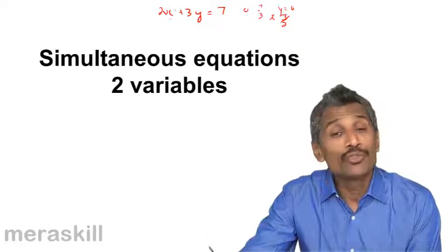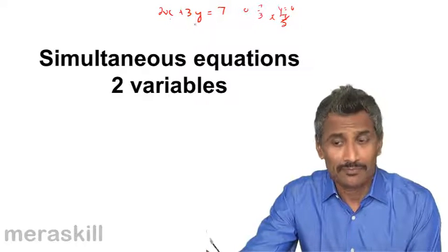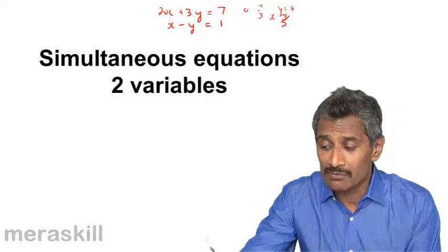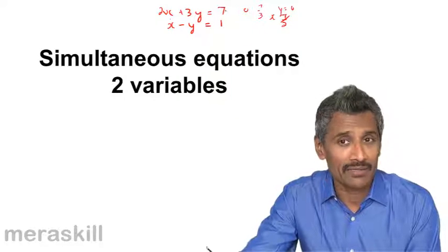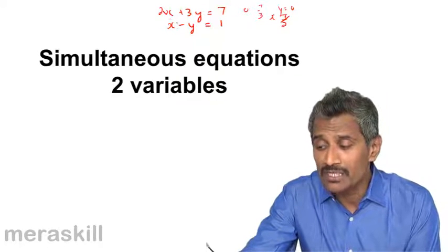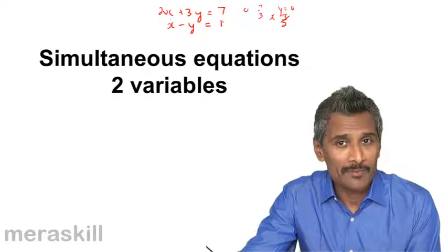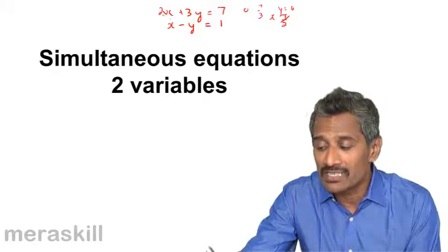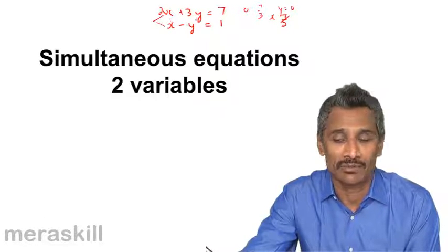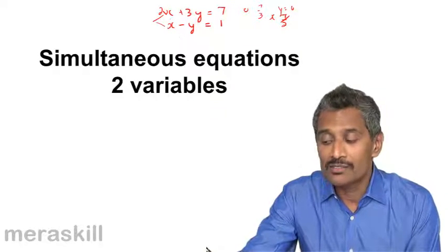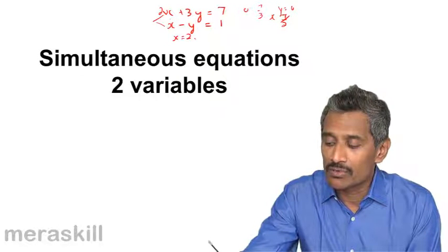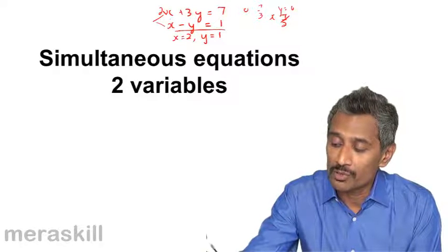But suppose you solve it with another condition wherein I say x minus y is equal to 1. So it's like telling twice a number plus thrice of another number is 7. The answers are indefinite, but if you combine it with a condition that the difference of the numbers is going to be 1 then there are two conditions that are satisfied. So the intersection of these two, that is both the conditions, will be satisfied by only one pair of x and y and that is called the solution or they are called the roots of this particular equation. In this particular case x is equal to 2 and y is equal to 1 will form the solution.